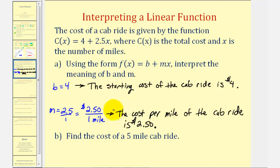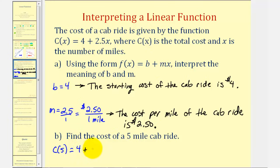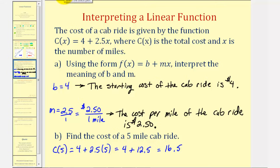So the linear function tells us there's a starting cost of four dollars to get into the cab, and then once we start driving, the cost is an extra $2.50 per mile. For part b, we want to find the cost for a 5-mile cab ride, meaning we want to find c(5). Substituting 5 for x: 4 + 2.5 × 5 = 4 + 12.5 = 16.5. Therefore the cost of a 5-mile cab ride is $16.50.